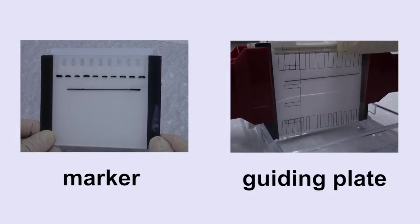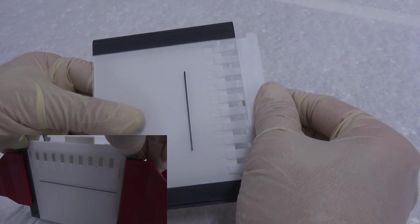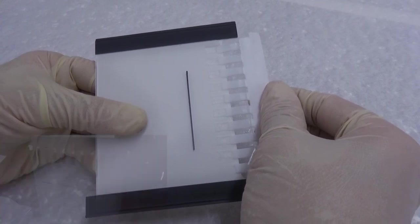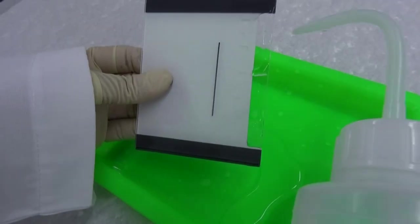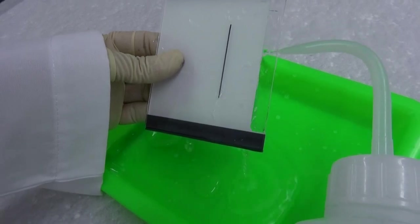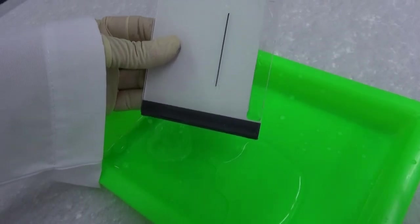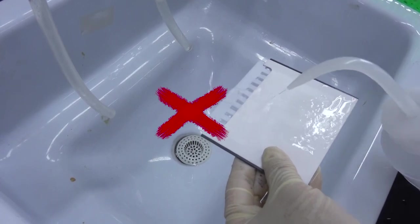You may use a marker to label and number the sample wells, or use a guiding plate later. The comb may be removed now or after the electrophoresis tank has been assembled. Gently pull out the comb to avoid damaging the gel. Rinse each sample well with distilled water to remove any residual gel solution. Decant the cassette sandwich briefly. To avoid clog, do not rinse the gel in a sink.